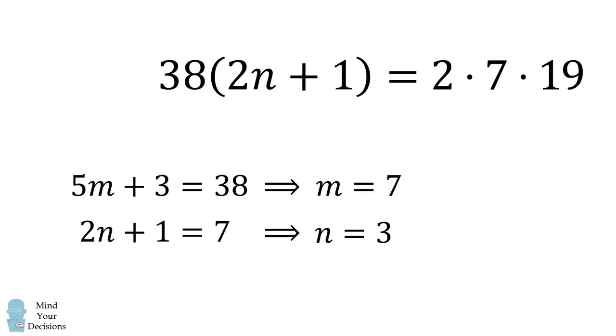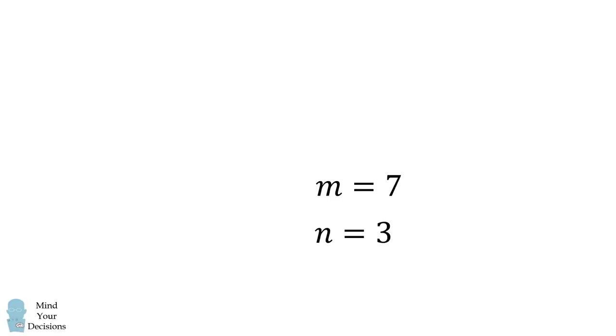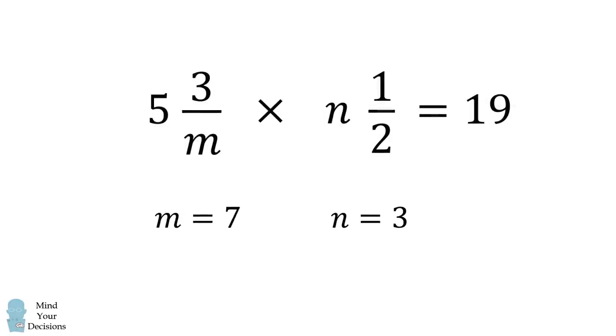So we have one possibility. Let's go ahead and check it. We substitute in the values for m and n, and this in fact is a solution to the equation. 5 and 3 over 7 multiplied by 3 and a half is equal to 19. So this is one way to solve the problem.